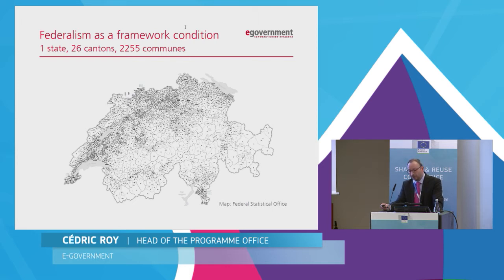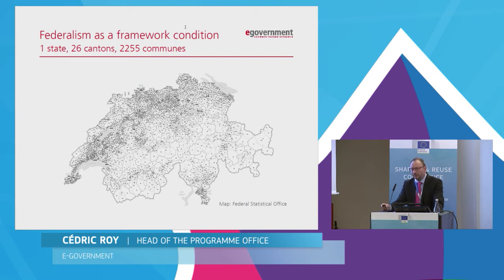In every administration you will find human resources, financial and technical services. In every commune and every canton you will also find specific laws and orders. So in this kind of constellation — something like little Europe — how can you imagine implementing a national e-government strategy? How can you reuse and share software development between the federal states, the cantons, and even the communes?